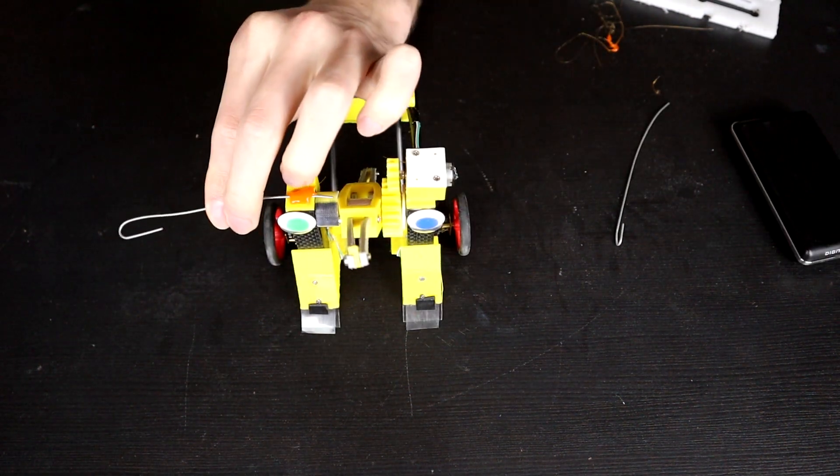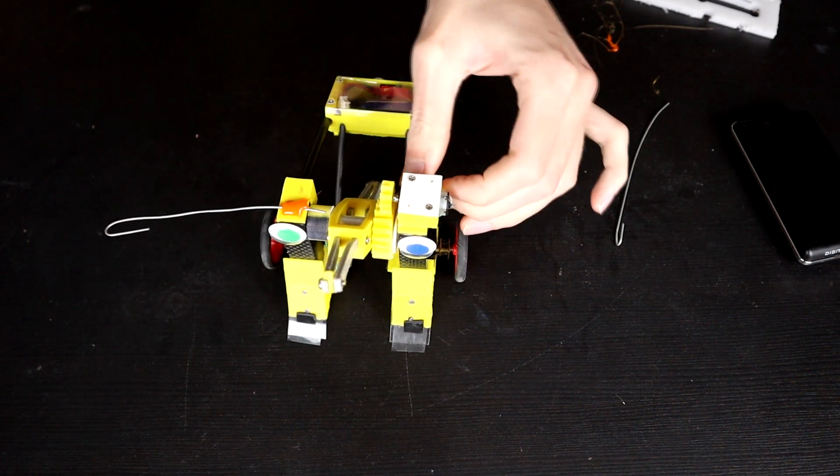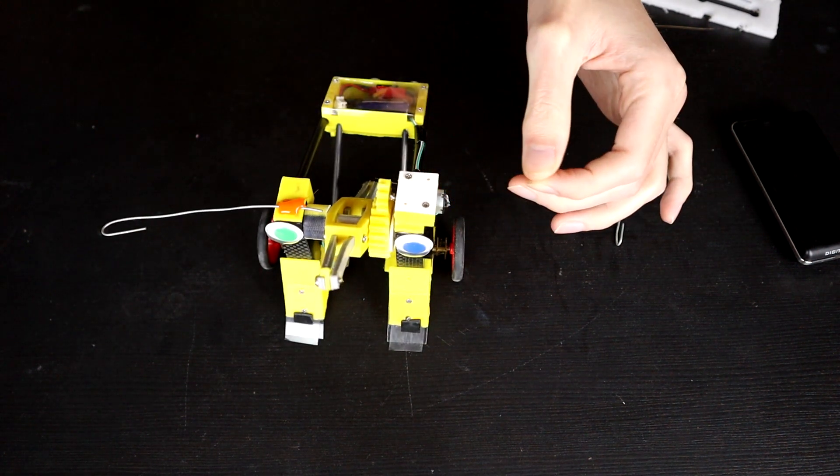But I think for now, what I want to do is print these in ABS, get rid of this hot glue that I've put down, print these in ABS. And see how we go.